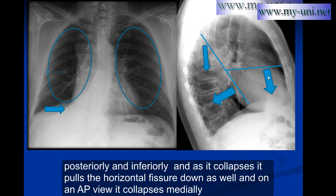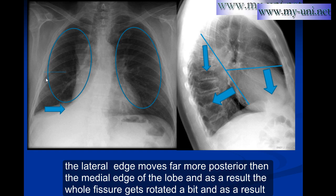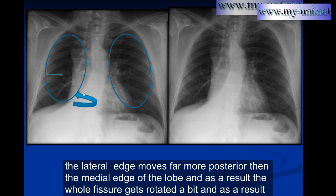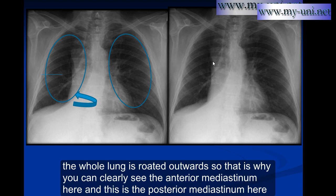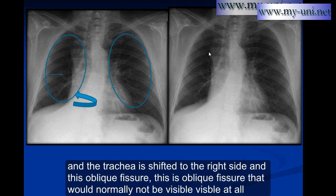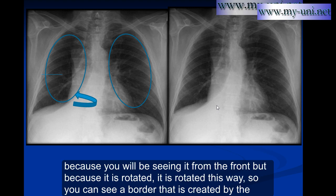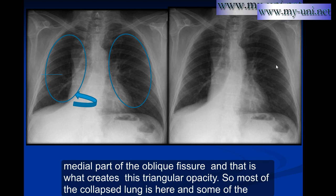As it collapses, it pulls the horizontal fissure down as well. On an AP view, it collapses medially, and the lateral edge moves far more posterior than the medial edge of the lobe. As a result, the whole fissure gets rotated. The whole lung is rotated outwards, which is why you can clearly see the anterior medial sternum and the posterior medial sternum. The trachea is shifted to the right side. The oblique fissure, which would normally not be visible from the front, becomes visible because it is rotated, creating a border seen as the triangular opacity.